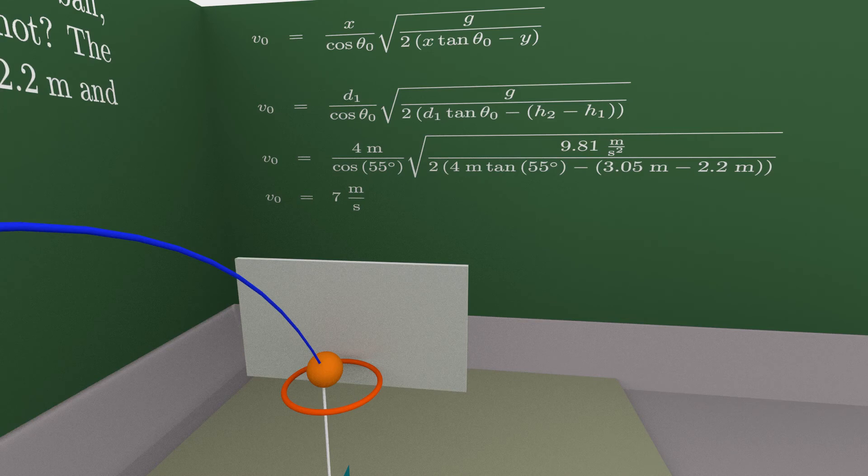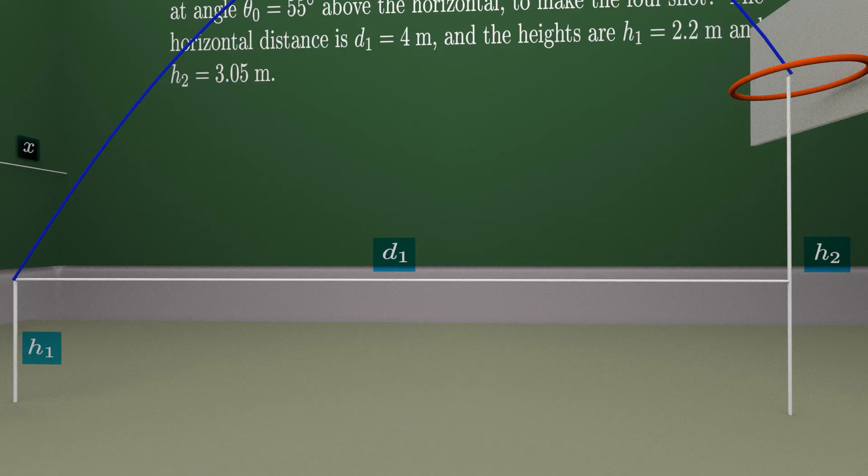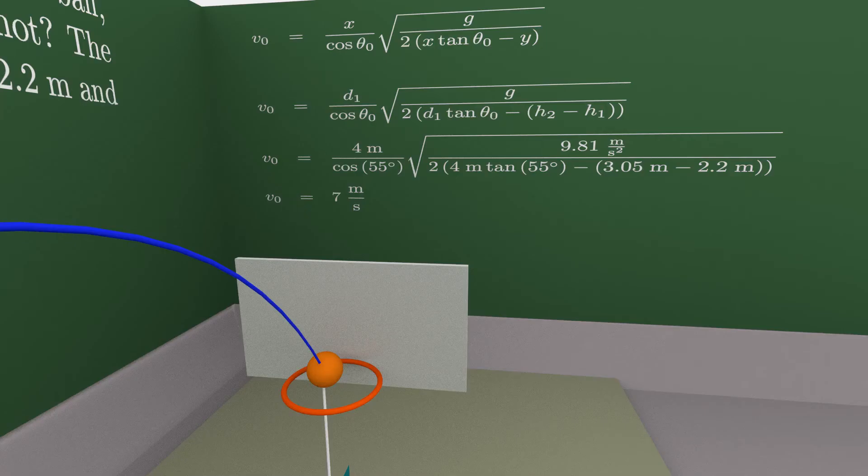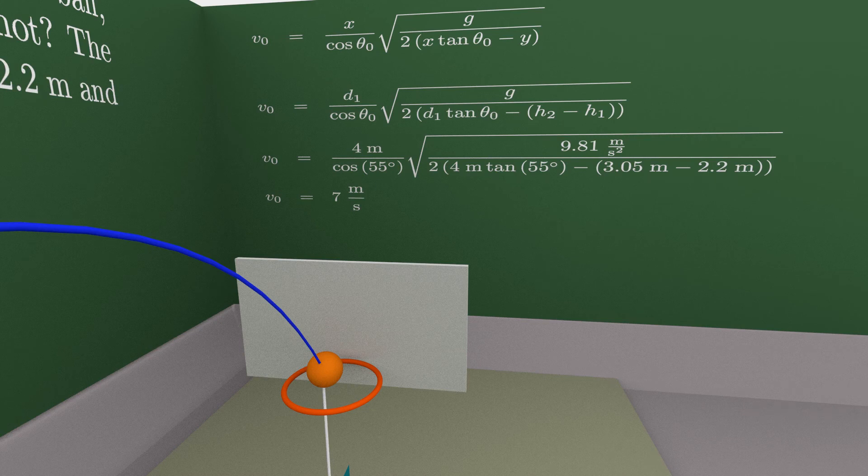Here, x is d1, y is obviously the difference between h2 and h1. And if we put all the numbers we know, we will get that v0 is 7 meters per second.